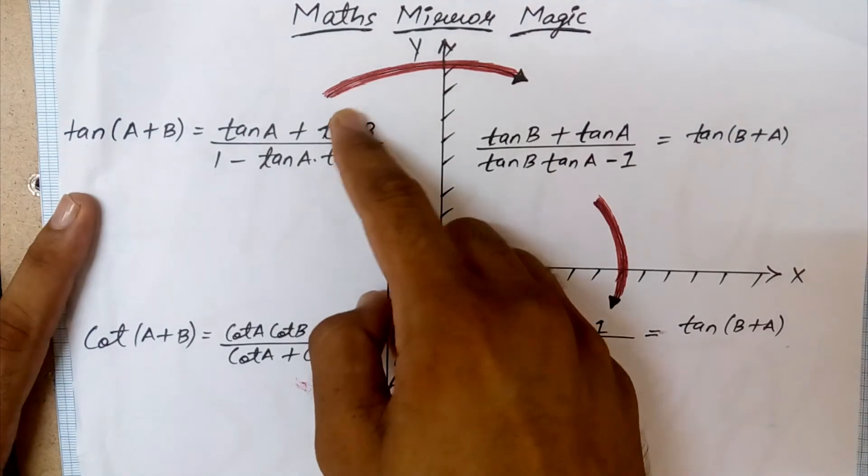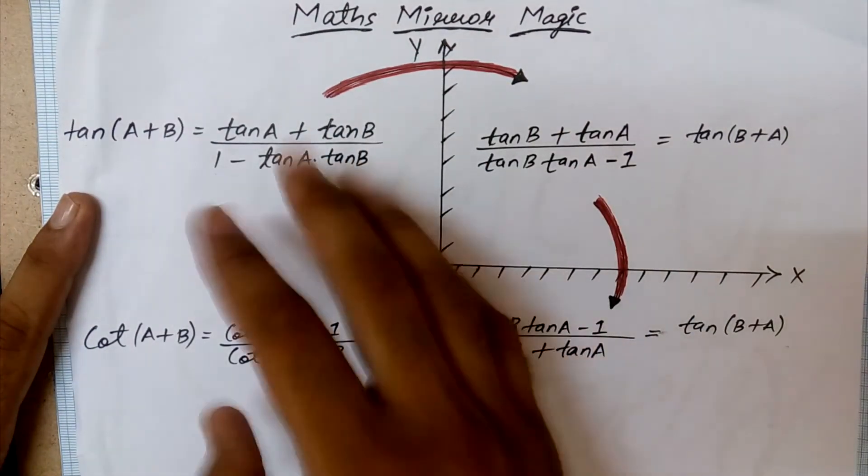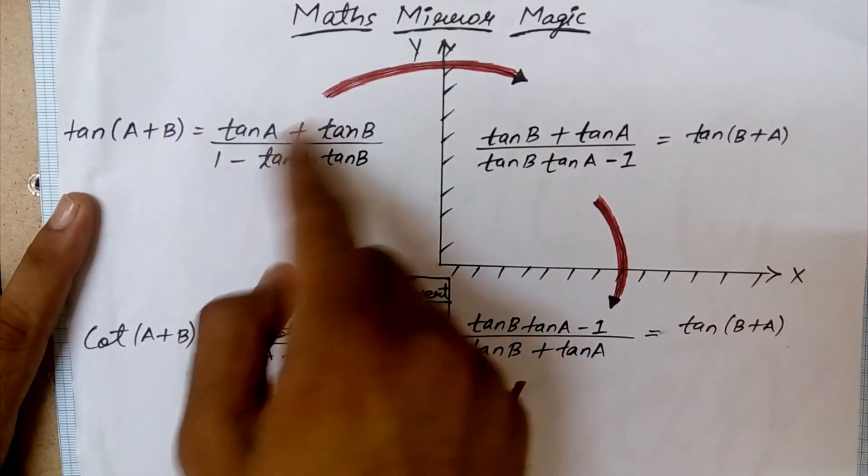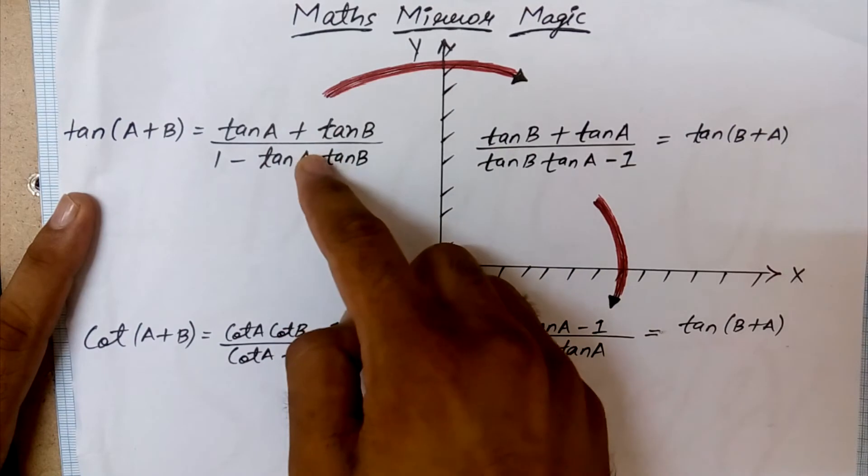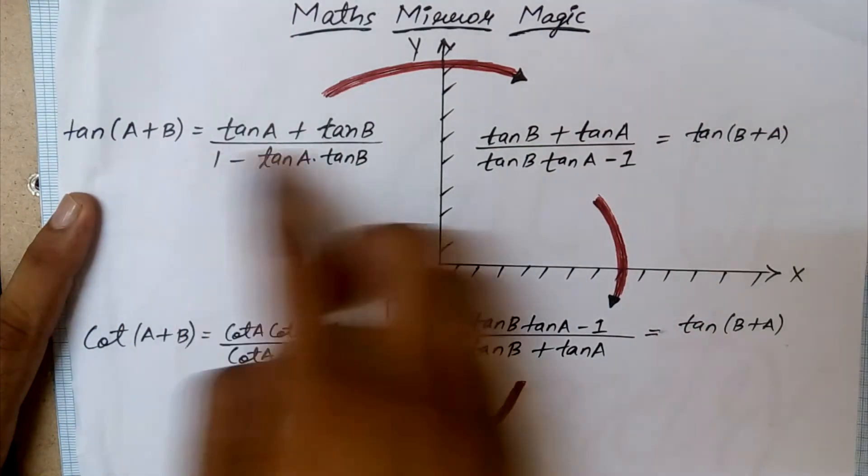Or you can say, for non-mathematicians, that we have to look into the mirror. If we see this in the mirror, what will we see? This will come here and this will go to the farther point, right? So that's what I did: just a mirror image. And then again, I did the mirror image.